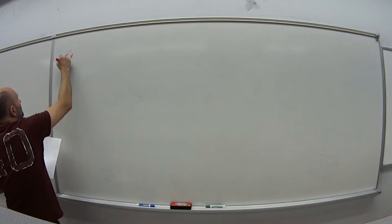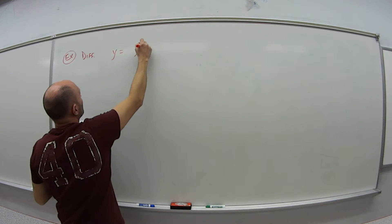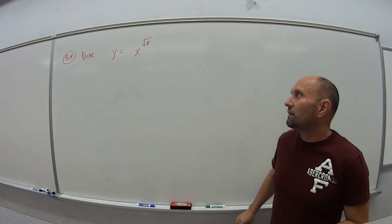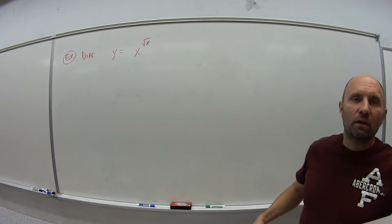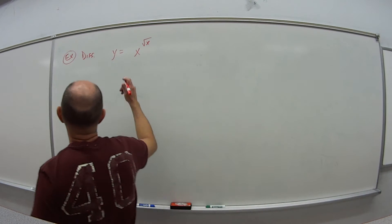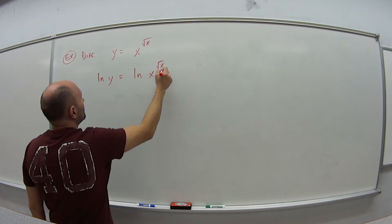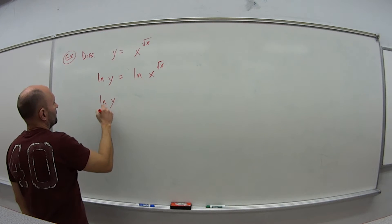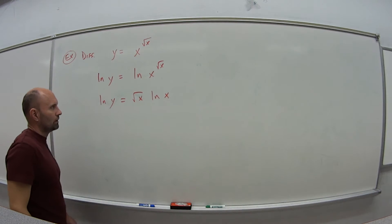For the last example, we want to differentiate y equals x to the square root of x power. This looks messy, so when we have these really messy-looking equations to differentiate, we take the natural log of both sides. So natural log of y equals the natural log of x to the square root of x. By the law of logs, I can bring the exponent down in front: natural log of y equals square root of x times natural log of x.